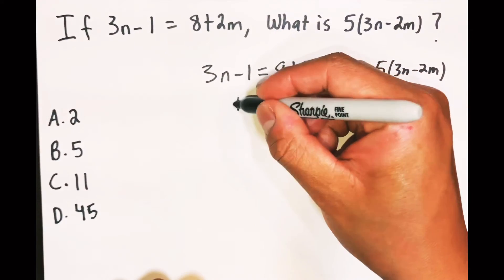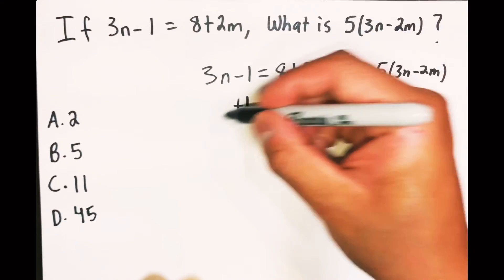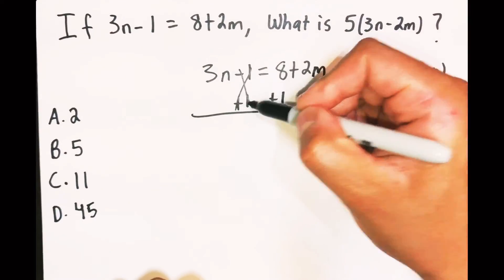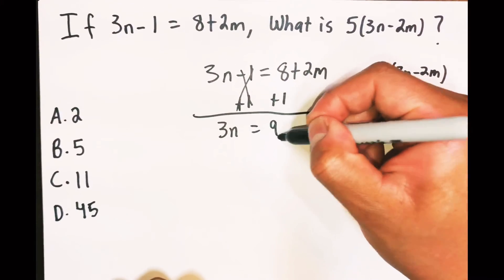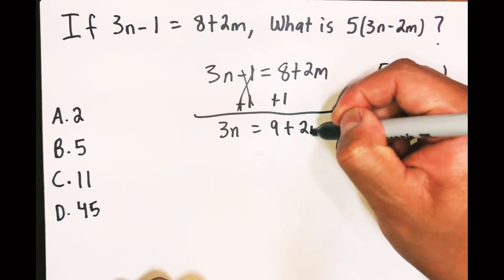So let me start by adding one to both sides. That'll get rid of this one right here, and I'll be left with 3n equals 9 plus 2m.